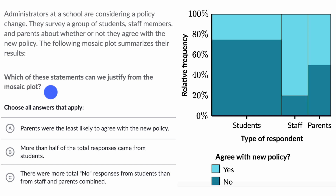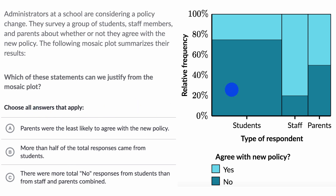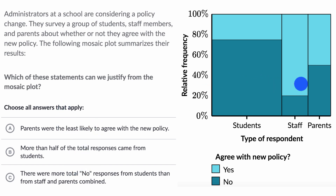Pause this video and try to figure this out on your own. Pick which of these statements can be justified — there could be more than one — based on this mosaic plot. Now let's work through this together. Before I even look at the choices, let me see if I can interpret this.